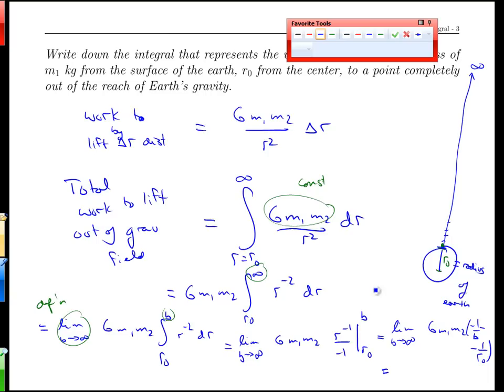And last but not least, as b gets larger and larger, whereas b is in the denominator, 1 over larger and larger and larger number, this heads towards zero. So at the end of the day, this term vanishes and we end up with negative negative, it's positive, equals GM1 M2 over r0.